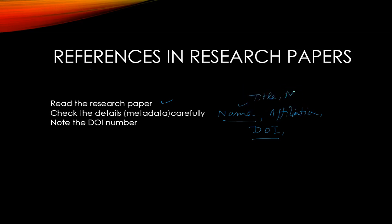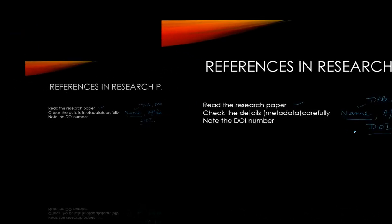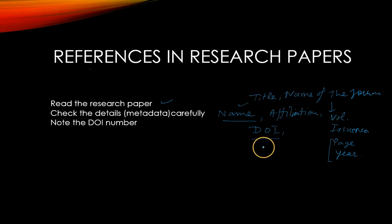Then check the title of the research paper, the name of the journal, the volume, issue number, page number, year — whatever sequence is given. So you have to check it very carefully and keep a uniform reference style in your research paper before submission.